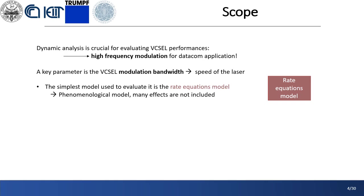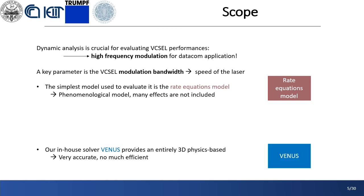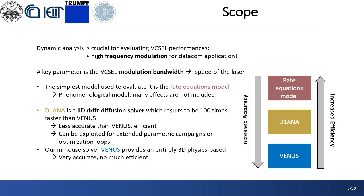This figure of merit can be extracted by means of the rate equations model, which, however, is a phenomenological model that can be exploited to extract parameters from already available data, therefore resulting to be not very predictive, even though very fast. On the other hand, our in-house 3D solver Venus provides an entirely physics-based approach involving optical, thermal, and electrical problems that are solved self-consistently to return very accurate results.